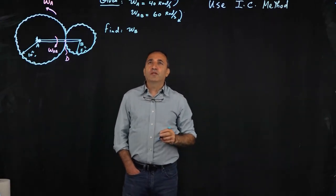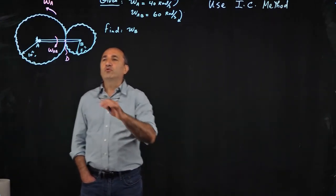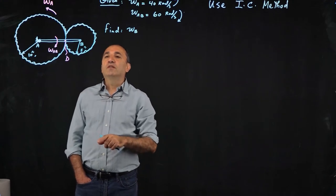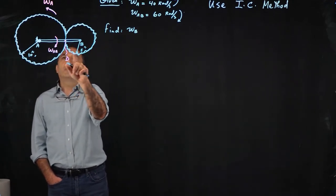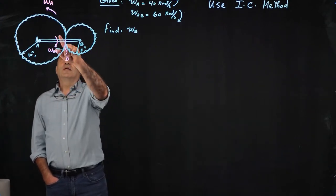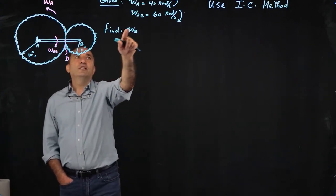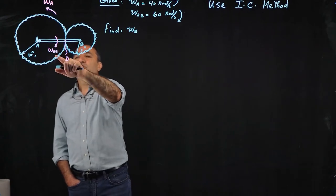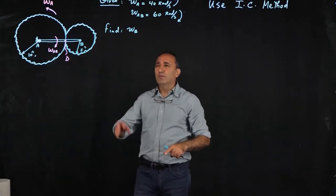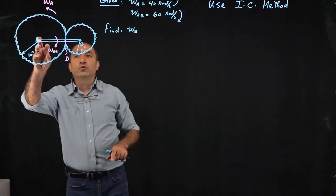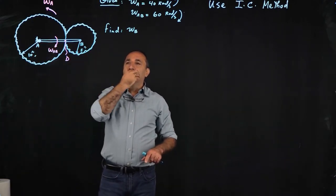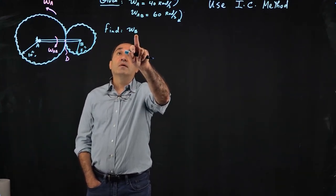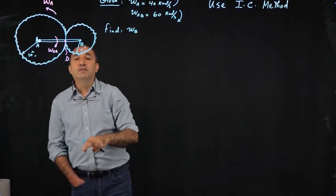So let's take a look at what's given and what we are trying to find. We have two gears, basically a gear with a radius of 10 inches and smaller gear B with a radius of 5 inches. The two are connected with an arm AB. Gear A is rotating at 40 radians per second clockwise, and arm AB is rotating clockwise at 60 radians per second. So basically you have two independent motors that are rotating gear A and arm AB.